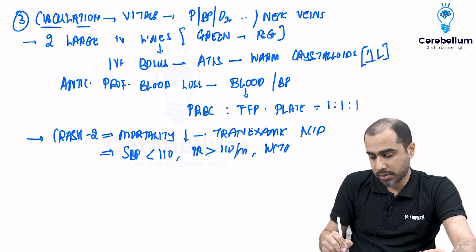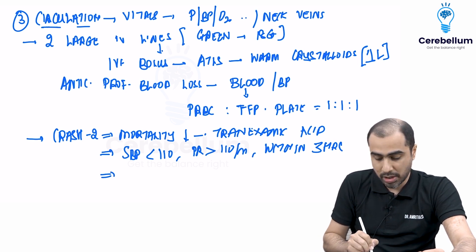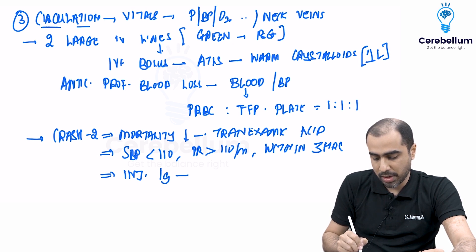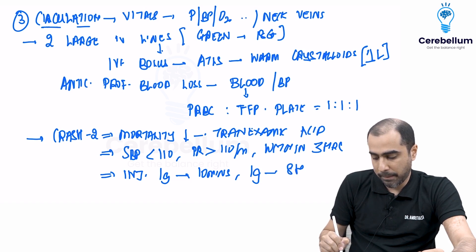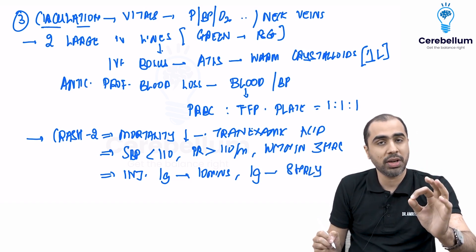Within the first three hours of trauma, the first dose has to be given within the first three hours. You are supposed to give injection tranexamic acid one gram in the first 10 minutes, and then one gram eight hourly as and when needed. This has to be given in the first three hours preferentially in these patients with deranged vital parameters.